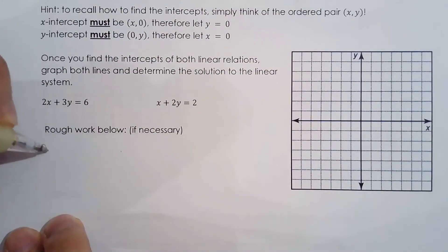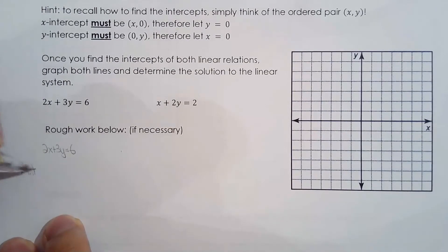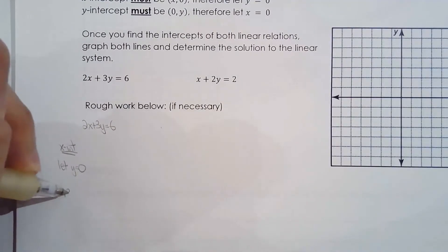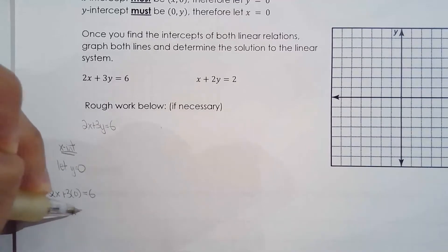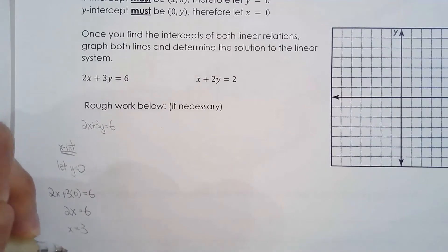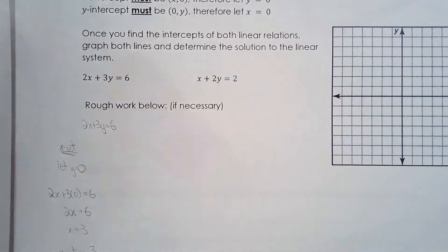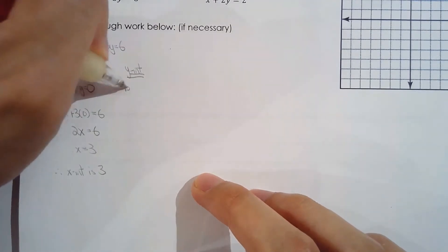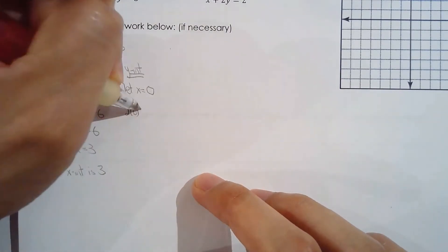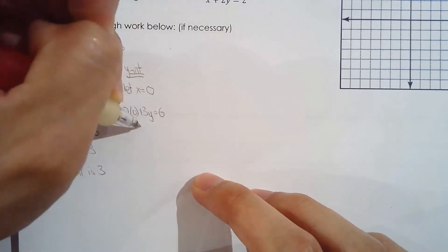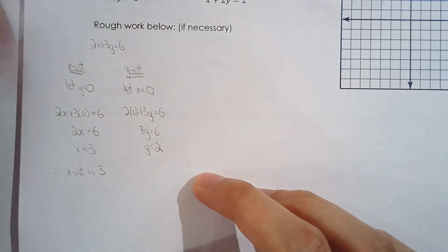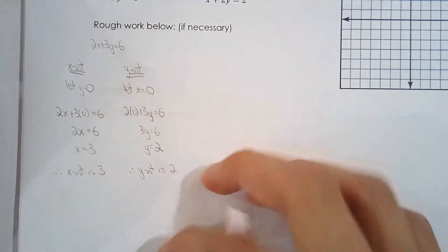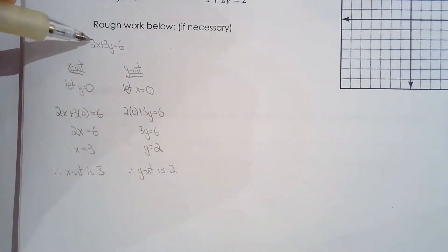We have two lines: 2x plus 3y equals 6 and x plus 2y equals 2. Working with 2x plus 3y equals 6 first — for the x intercept, let y equal zero: 2x plus 3 times 0 equals 6, so 2x equals 6, meaning x equals 3. Therefore the x intercept is 3. For the y intercept, let x equal zero: 2 times 0 plus 3y equals 6, so 3y equals 6, divide both sides by 3, giving y equals 2. The y intercept is 2. This is sufficient information to graph the line 2x plus 3y equals 6.